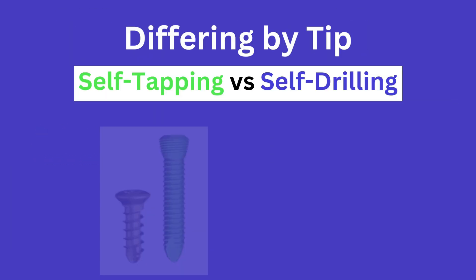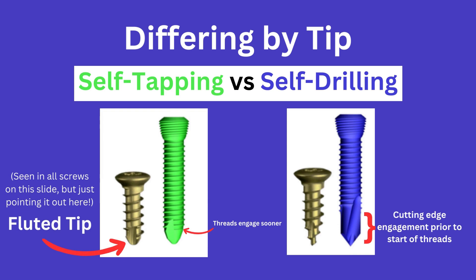Screws can also vary based on the tip. Self-tapping screws need to have a drill hole but can tap as they progress. These will have a fluted tip for debris movement. Self-drilling screws, on the other hand, do not need a prior drill hole and can drill and tap as they are screwed in. These will also be fluted but will have a larger cutting edge that provides the drilling function as the screw progresses.